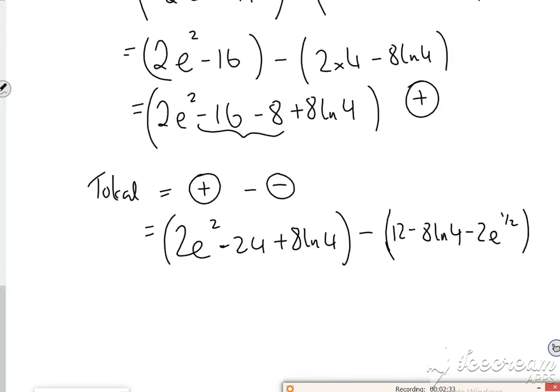So it's quite messy in terms of an answer, but I've got 2 e squared minus 24, plus 8 ln 4, minus 12, plus 8 ln 4, minus 2 e to the half. So if I tidy up the answer at the end, because it looks messy, but it's not too bad.